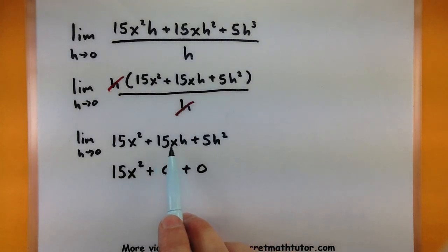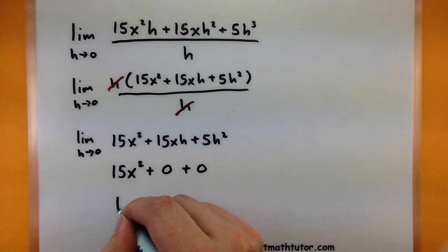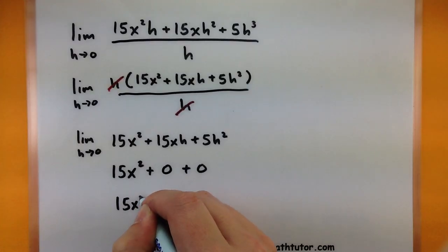So this guy has a zero. It'll be multiplied by everything, zero. Zero squared multiplied by 5, zero. And now we can finally see the result is simply 15x squared.